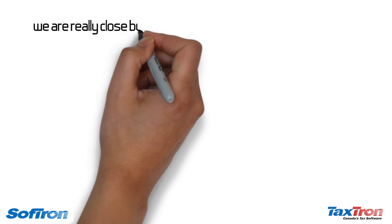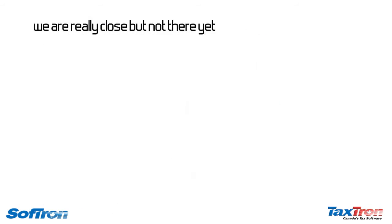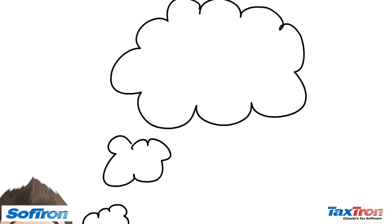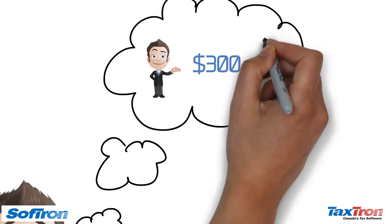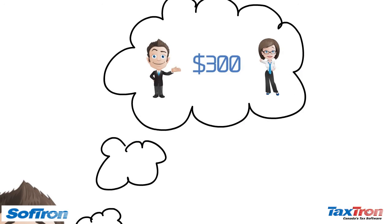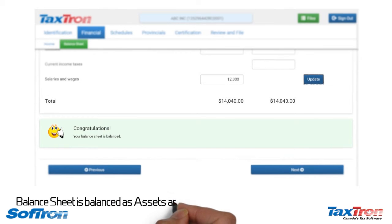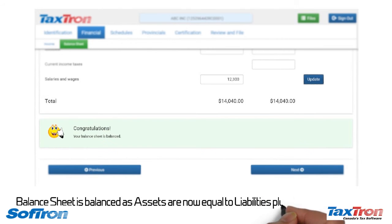We are really close but not there yet. Charles reviews all other entries and realizes that he paid $300 for a Christmas bonus to Diana who helps him manage his office. So he adds another $300 to his Salaries and Wages tab. And there it is — the balance sheet is balanced as assets are now equal to liabilities plus shareholders' equity.